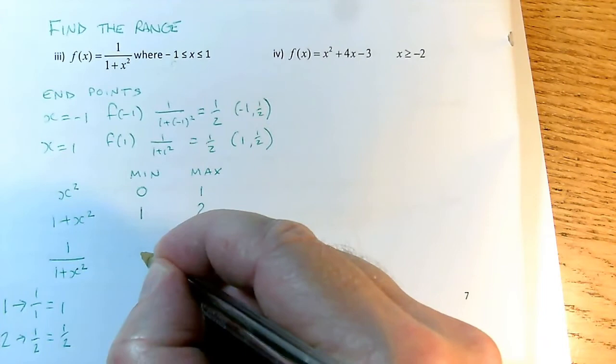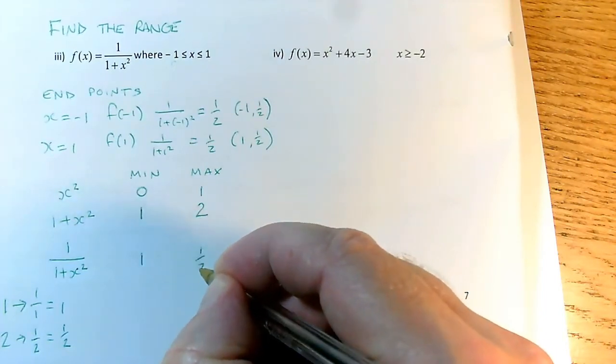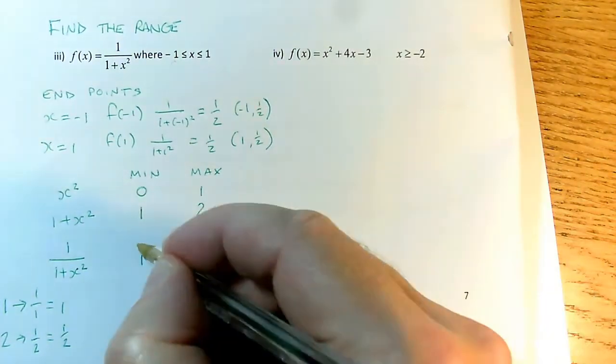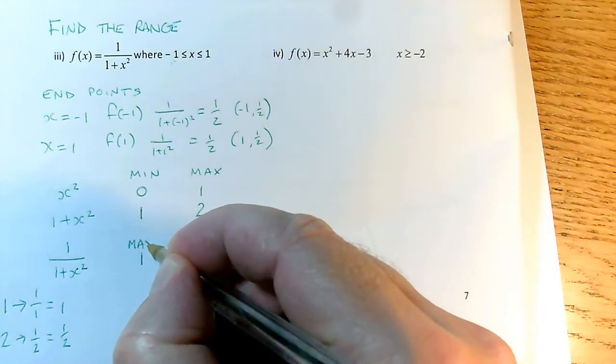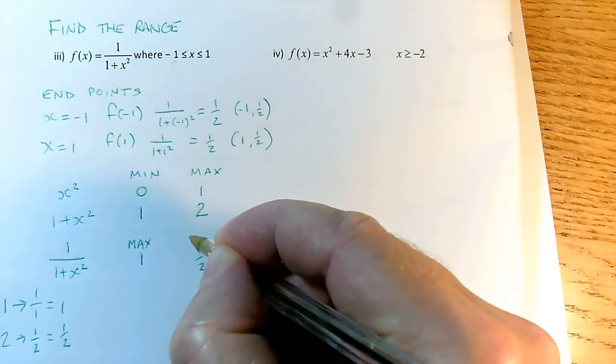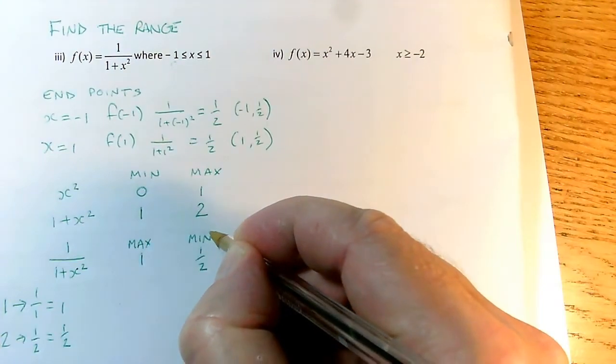I'm not going to put 1 here and 1 half here, because then maximum and minimum would be the wrong way round. Or actually I can do, I can put 1 here and 1 half here, but because I'm now doing 1 over, the order has swapped round. So this is now my maximum value, and my minimum value is 1 half.